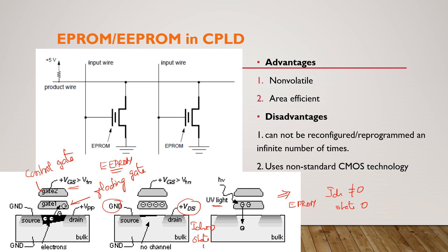Both EEPROM and EPROM are based on the floating gate type transistor. The advantage is that it is non-volatile and area efficient. The disadvantage is that it cannot be reprogrammed like an SRAM cell an infinite number of times — it is limited. Antifuse cannot be reprogrammed at all. It also uses non-standard CMOS technology, so we cannot achieve low power consumption, high speed, and low area as with standard CMOS.